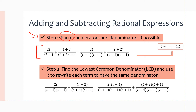We have an addition question: 2t all over t squared minus 1, plus t plus 2 all over t squared plus 3t minus 4. We want to factor all numerators and denominators. The 2t is already factored. For t squared minus 1, we have a difference of squares, so we factor it as t minus 1 times t plus 1. That takes care of the first term.